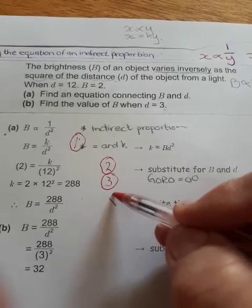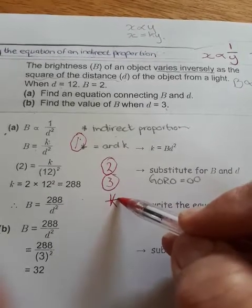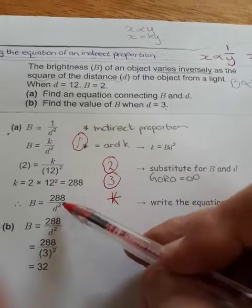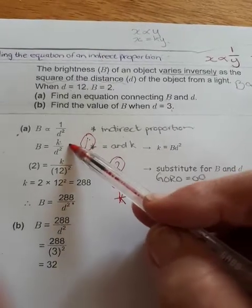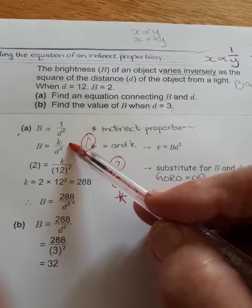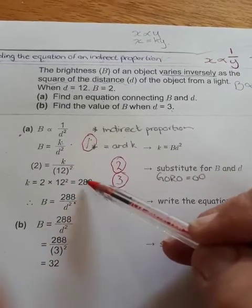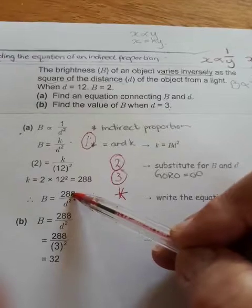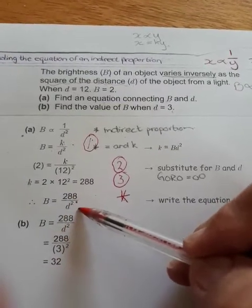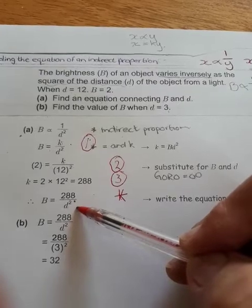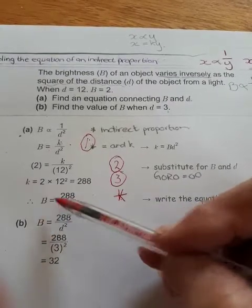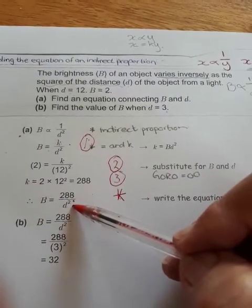Lastly, because you are asked to write an equation, you must write the equation. All that means is you go back to what you've written, and you substitute your constant with the value that you have calculated. Now we've got an equation that indicates the indirect proportion between the brightness and the square of the distance.